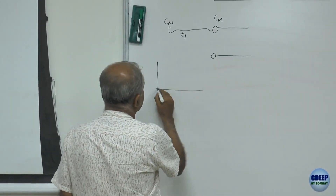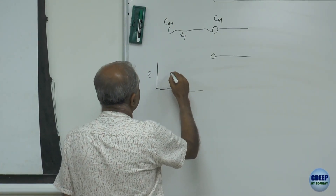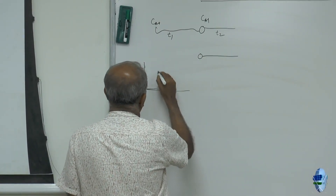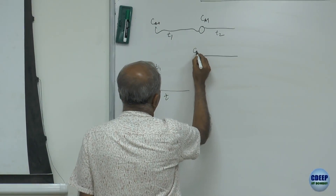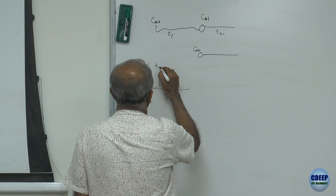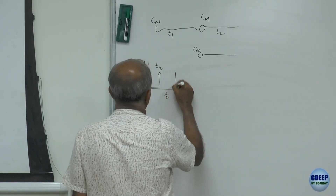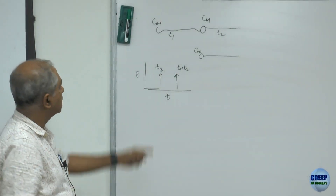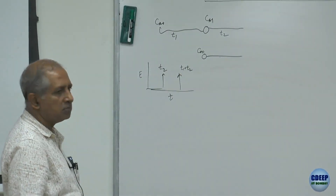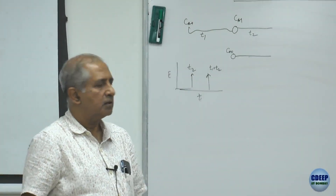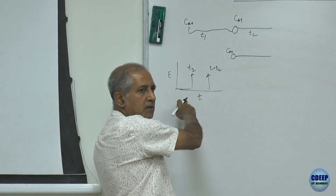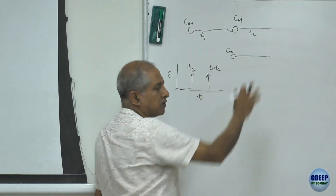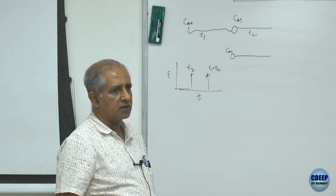If you look at the RTD of such a situation — E versus time — there will be a delta function at T2 corresponding to this element, and a delta function at T1 plus T2 corresponding to the second one. The T2 one will come out earlier. This one will come out having spent T1 plus T2 seconds in the reactor.